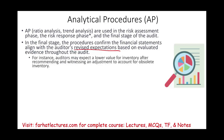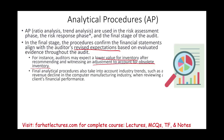For example, an auditor may expect a lower value for inventory after recommending and witnessing an adjustment to this account for obsolete inventory. If throughout the audit we noticed we needed to write down a lot of inventory, we'd expect inventory to have a lower percentage of sales or current assets. Analytical procedures also take into account industry trends — for example, if revenue is declining in the computer manufacturing industry, we expect that revenue will decline if we are auditing a computer manufacturing company.